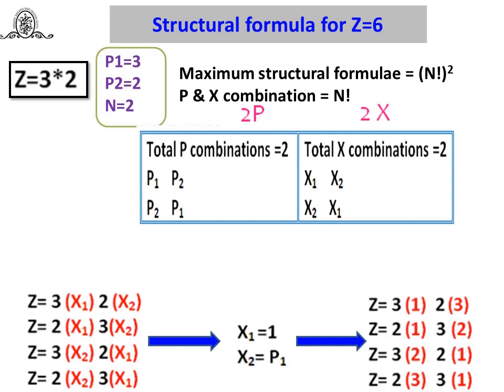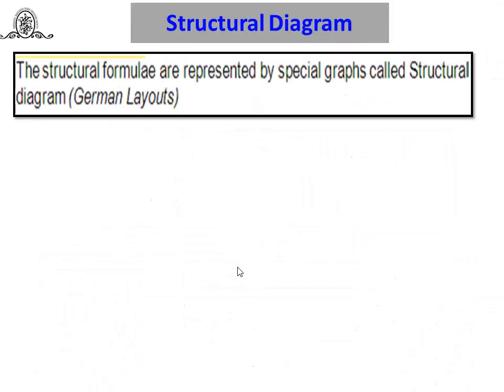By these combinations you can obtain four formulas, and for these four formulas we have to construct the structural diagram. Out of these structural diagrams we have to do the optimization of structural diagram and select the optimized one — we will discuss optimization in another class. Today we are going to see how to construct a structural diagram from these four formulas. In today's session we will discuss any one formula to construct a structural diagram.